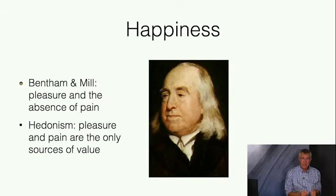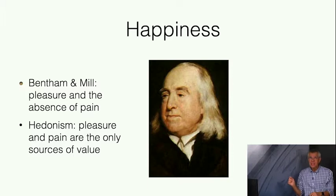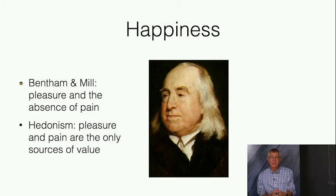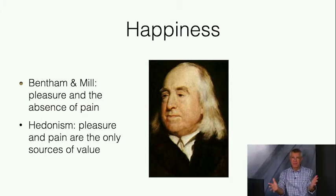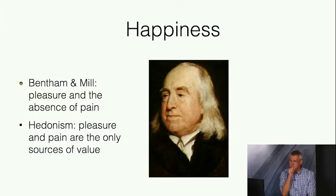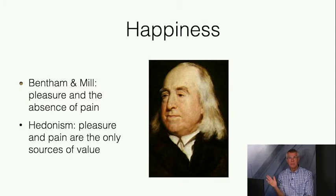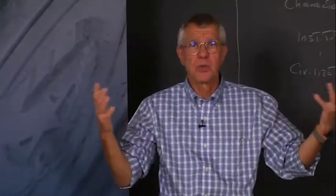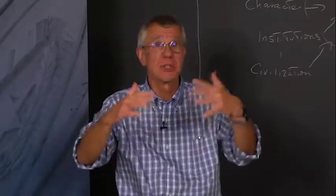Bentham and Mill have a different conception of happiness. For them, happiness is pleasure and the absence of pain. That's a view known as hedonism—pleasure and pain are the only sources of value. A lot of modern philosophers look at this and think it seems awfully one-dimensional. Why is happiness just pleasure and the absence of pain? Why aren't all sorts of other things included that Aristotle would have included as part of flourishing? After all, to be happy is not just to feel pleasure or not feel pain.